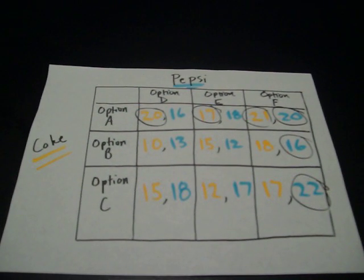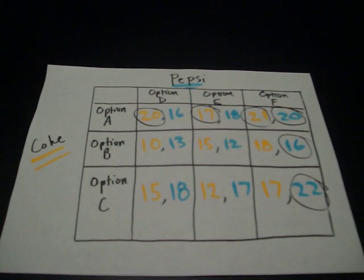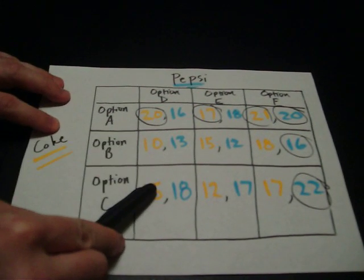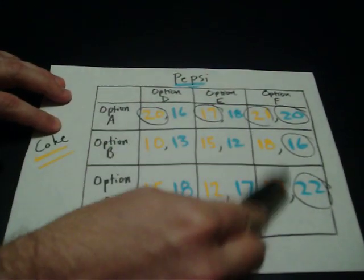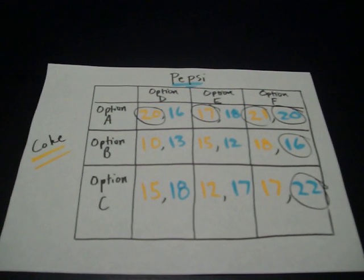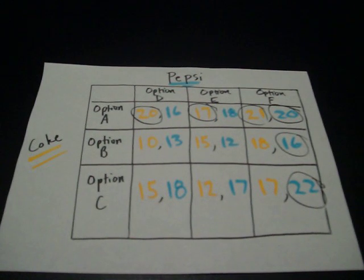Pepsi, coincidentally, also has a dominant strategy. Their dominant strategy was to always pick option F. When you go through these games, you just compare the numbers up and down, up and down, up and down, and side to side for the player at the top, and just circle the one that wins. The one that's circled twice is what they call the Nash equilibrium.